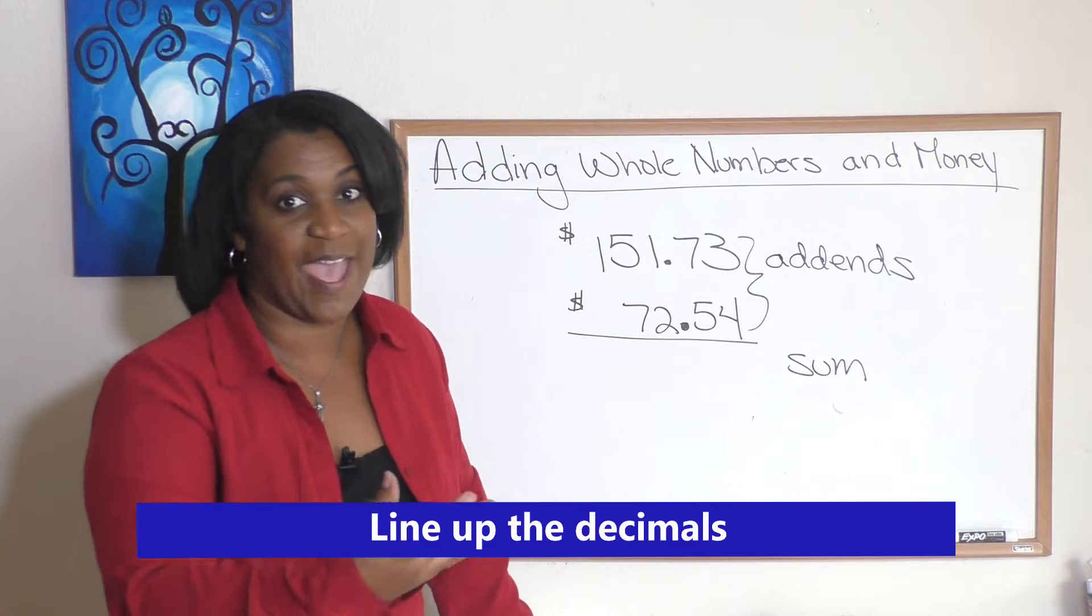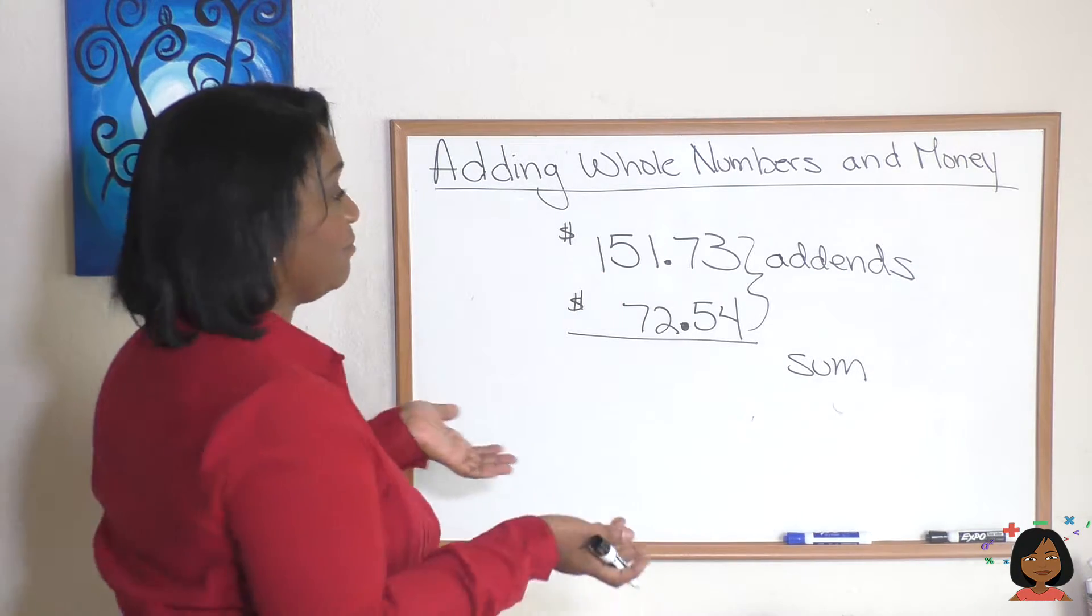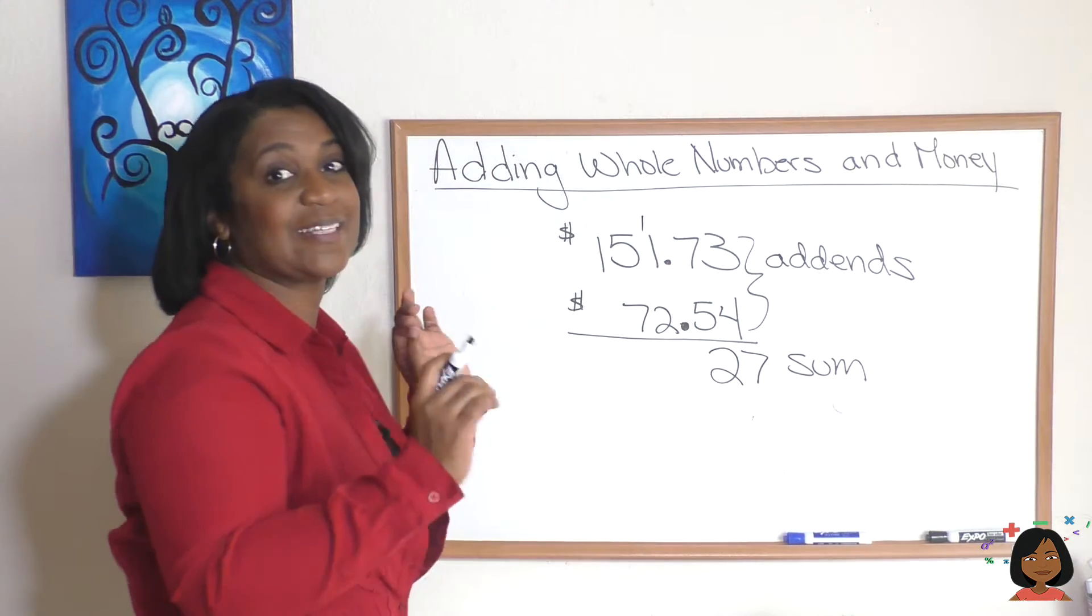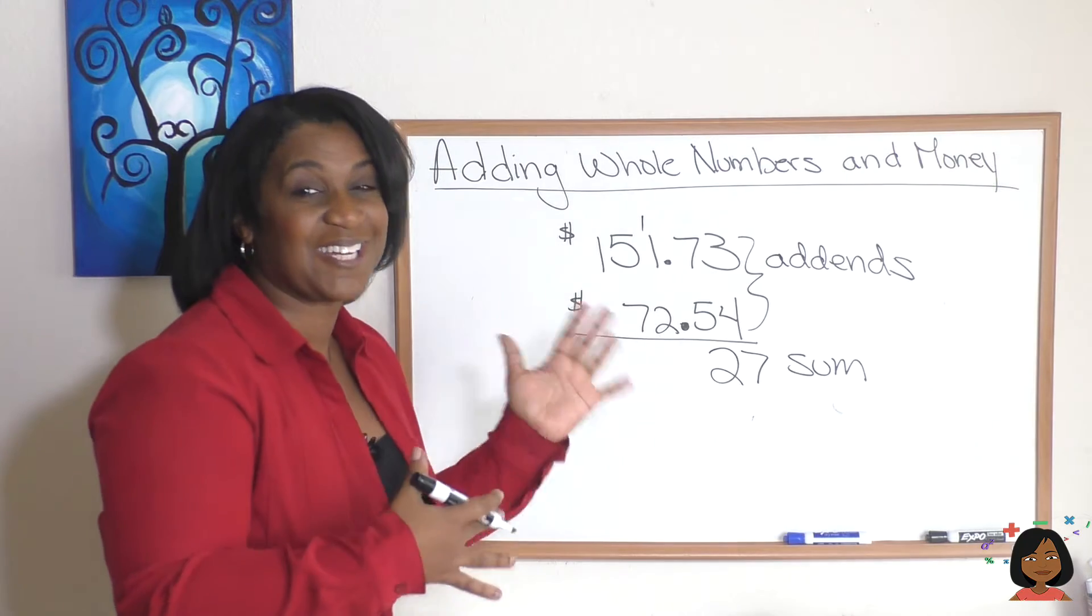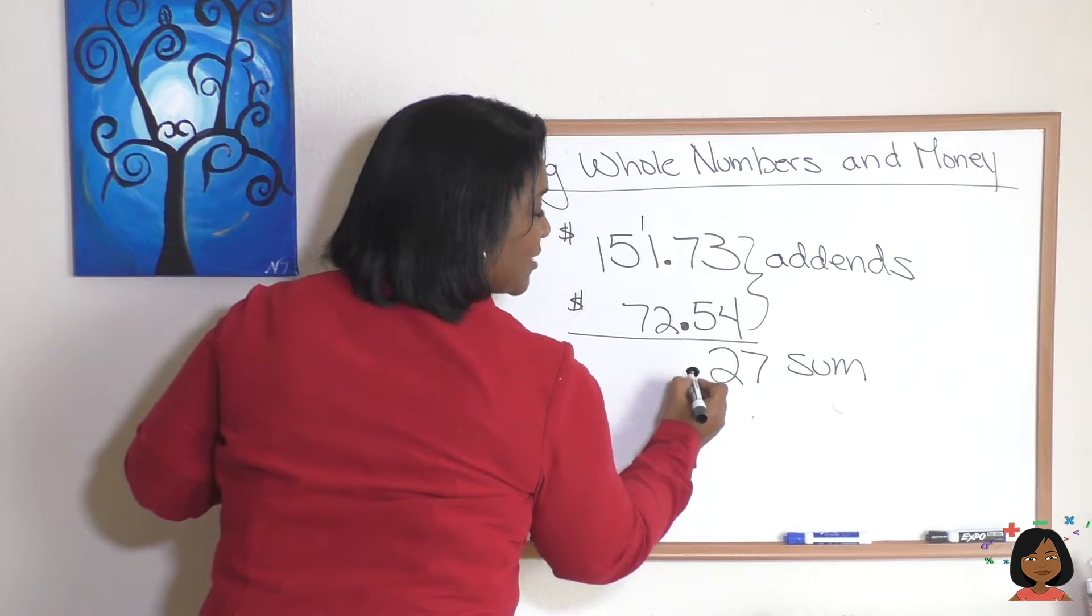Now here I've lined up my decimal points for you, so I'm ready to add. 3 and 4 is 7, 7 and 5 is 12. I personally like to just bring down my decimal point right here so I don't forget that I'm dealing with money. So you can go ahead and write that decimal.